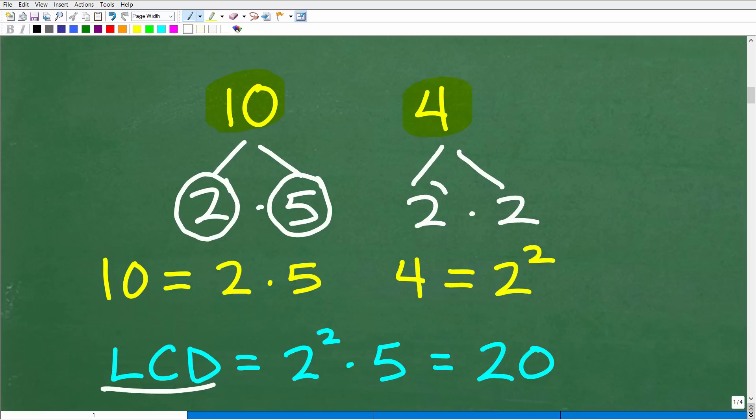How about 4? Well, 4 is clearly going to be 2 times 2. These are prime numbers. So 4 equals 2 times 2. But here's the deal: anytime you have repeating factors like 2 and 2, write them as a power. 2 times 2 is the same thing as 2 squared.